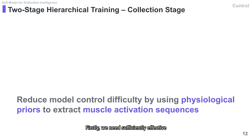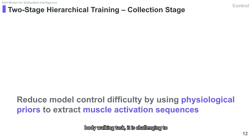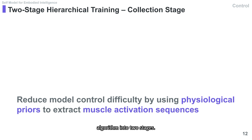We need sufficiently effective data to train the encoder-decoder, but due to the high difficulty of the full-body walking task, it is challenging to collect effective data directly through training. Therefore, we divide the entire algorithm into two stages.